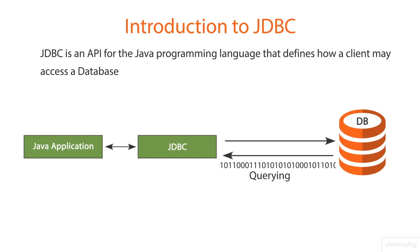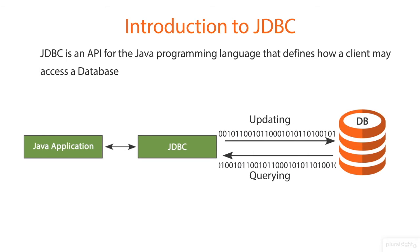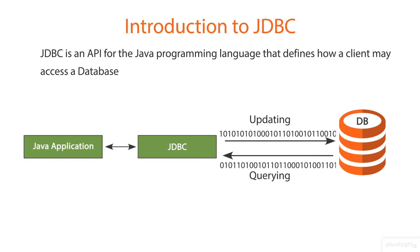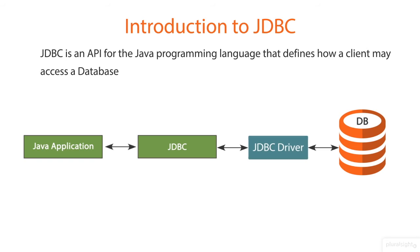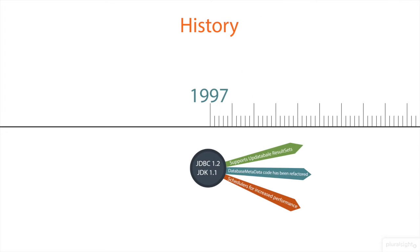JDBC is oriented towards relational databases. The JDBC API uses JDBC drivers to connect with the database. Now let us understand a brief history about JDBC. Sun Microsystems released JDBC as a part of JDK 1.1.